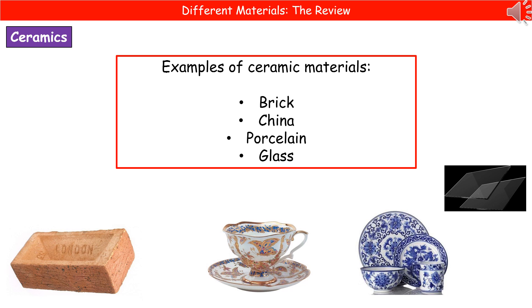The first of these alternative materials are ceramics. Some key examples of ceramic materials that you will have encountered are brick, china, porcelain, and glass. All of those are ceramic materials.